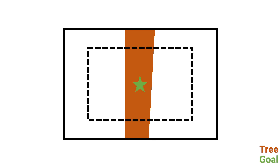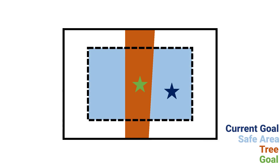We then take a small patch around the goal location and look for free space. We then adjust our current goal location towards the free space which is closer to the goal.